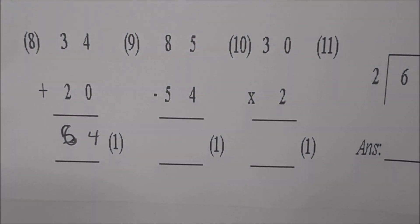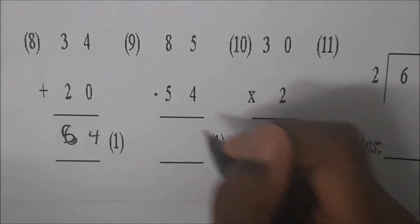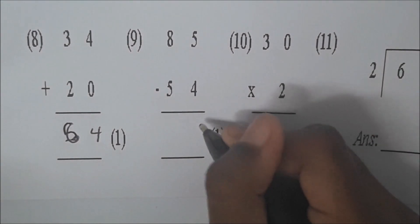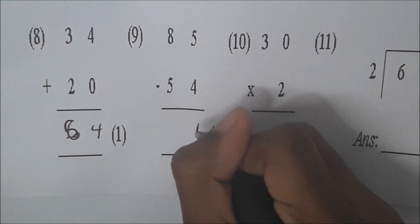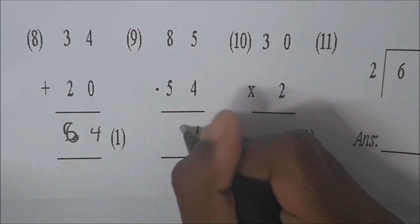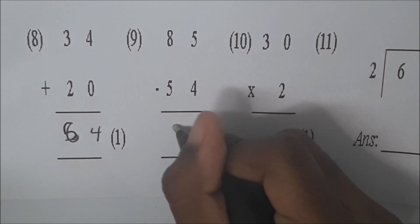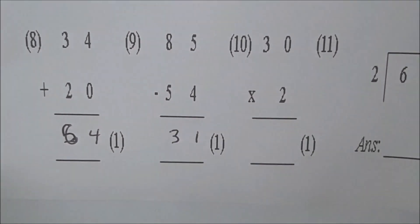Go to number nine. What are you subtracting? Eighty-five take away fifty-four. Tell me what you're subtracting. Five take away four is one. And then eight take away five is three. Very good. The answer is 31.